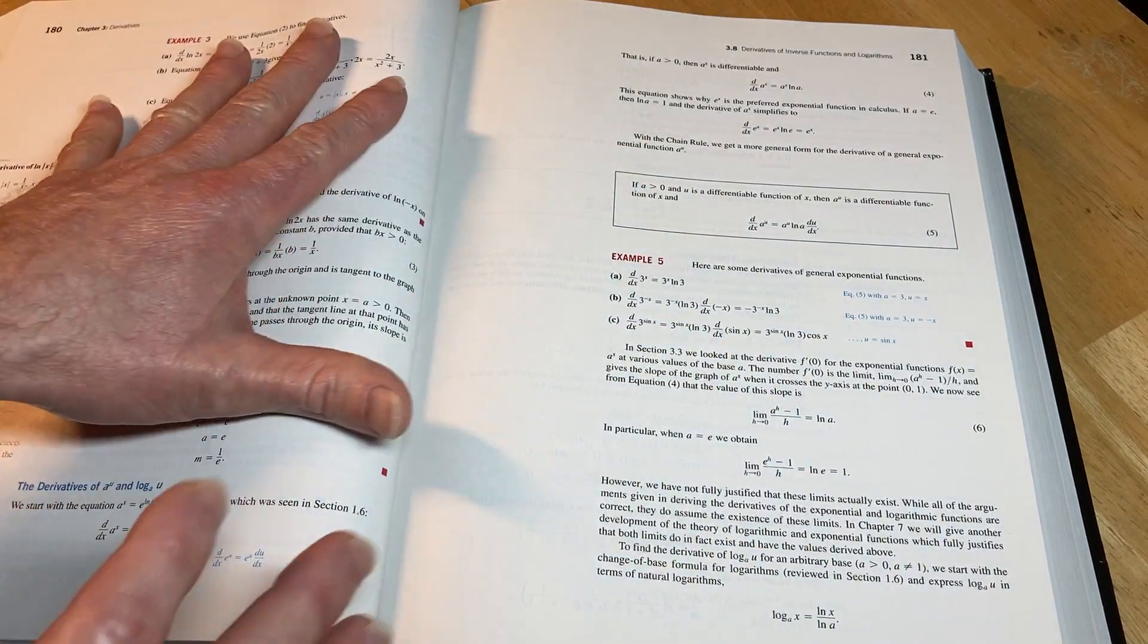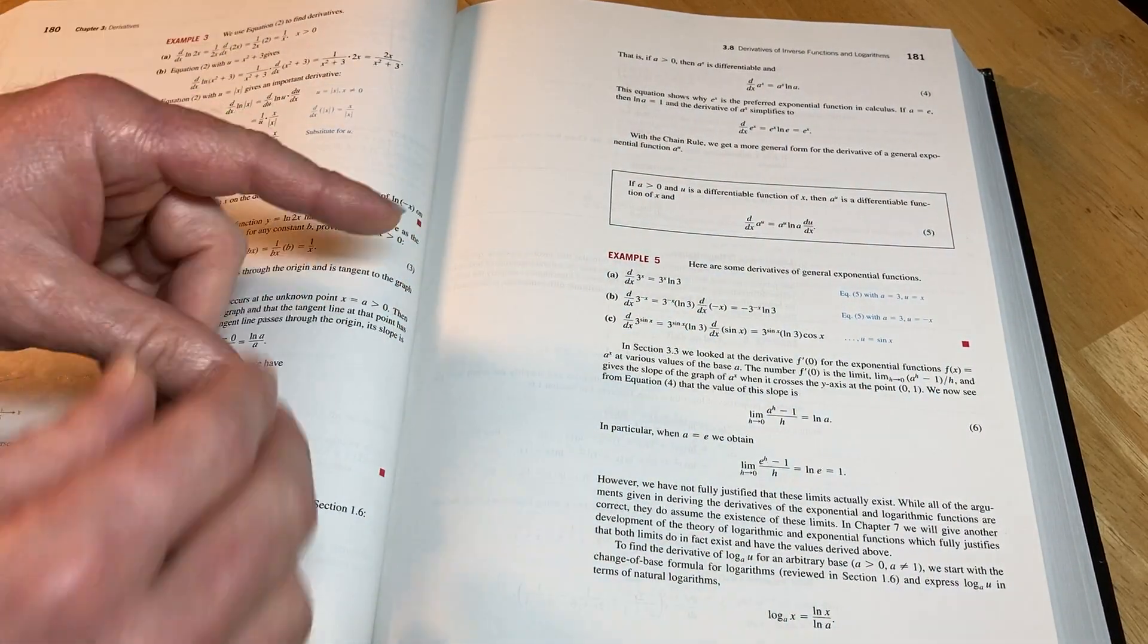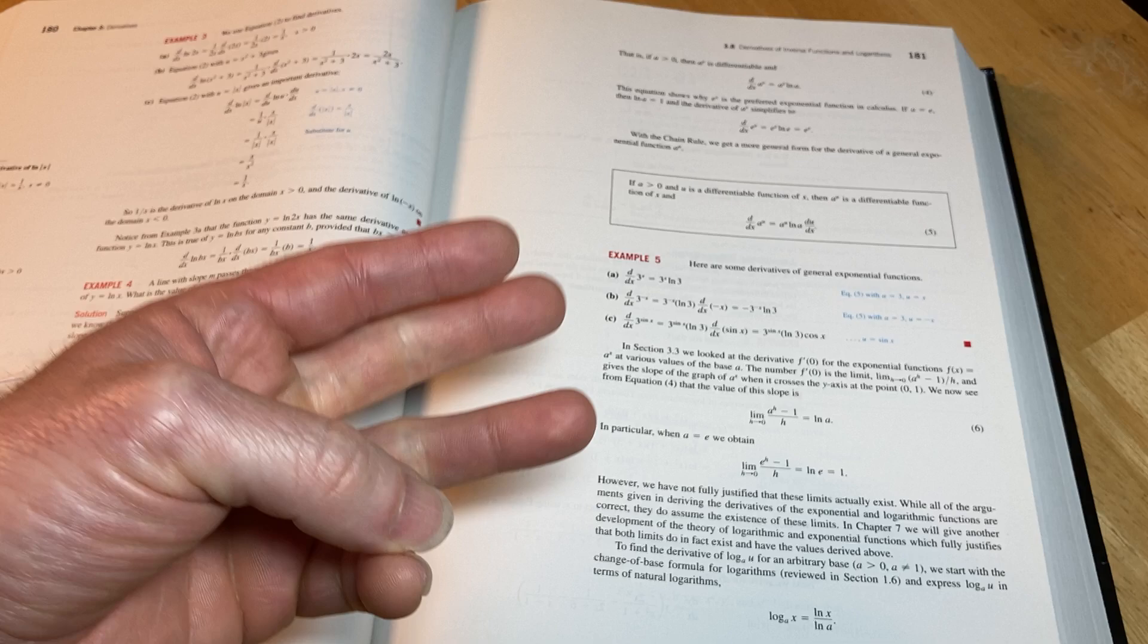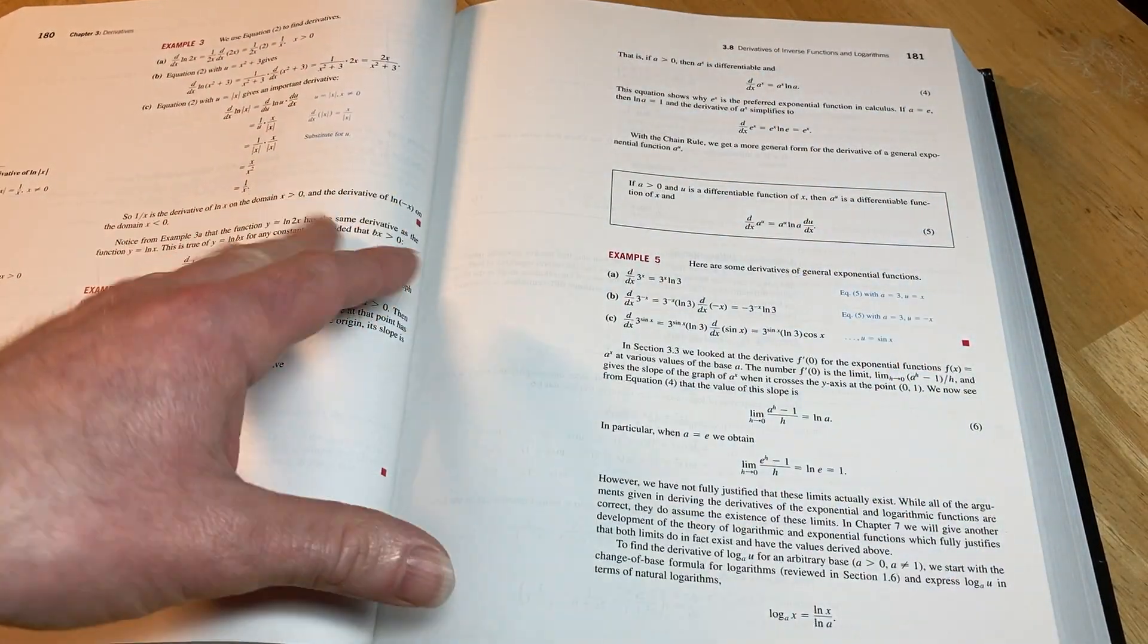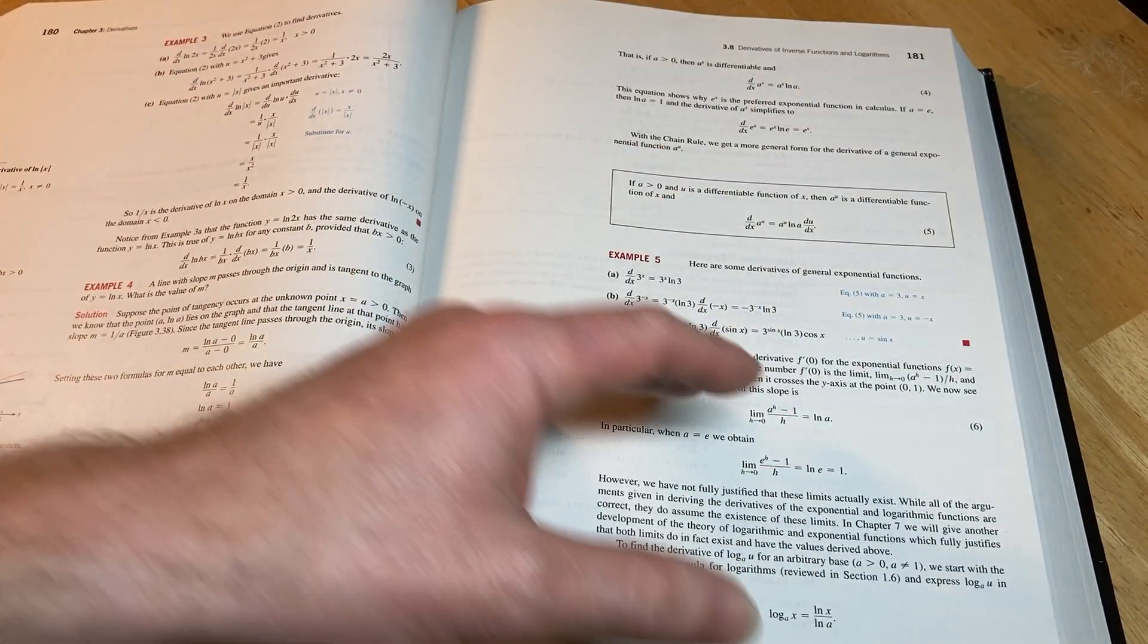Whereas this one has answers to only the odd-numbered exercises. So this book has everything. It has everything you need for Calculus I, Calculus II, and Calculus III in a college setting in the U.S.